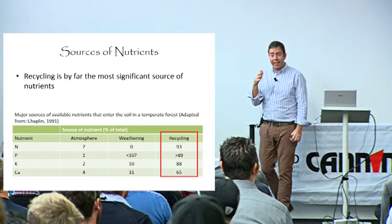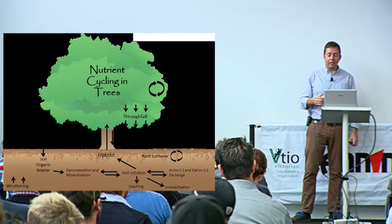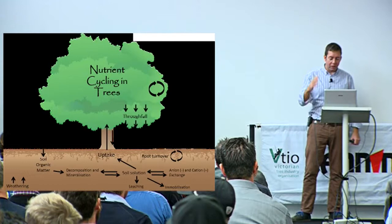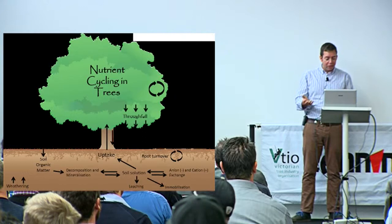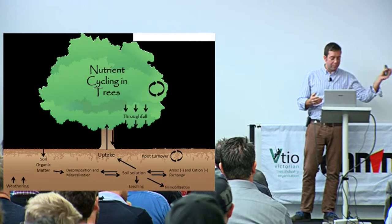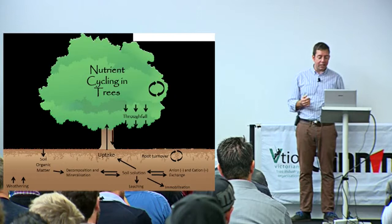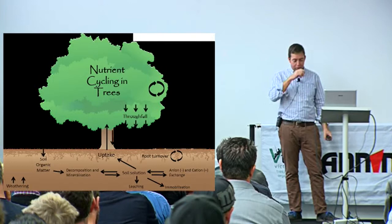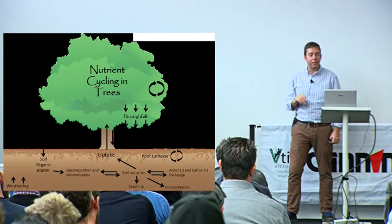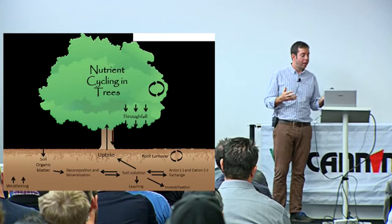Nutrient cycling itself is a highly complex thing. We've got internal redistribution, foliar leaching through rain through the canopy, stem flow, wet and dry deposition. Below ground we have organic matter decomposition and mineralization of minerals that become available in the soil solution, potentially leached before reaching the root system. We have anion and cation exchange, some may get immobilized, root turnover contributing to organic matter, and loss through volatilization - it's a pretty complex field to grapple with.